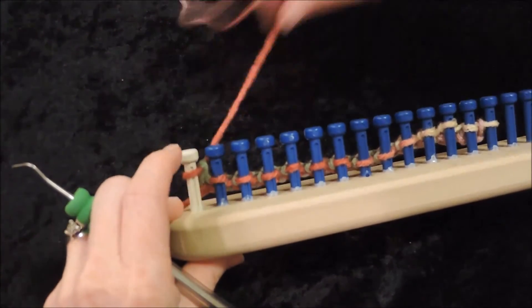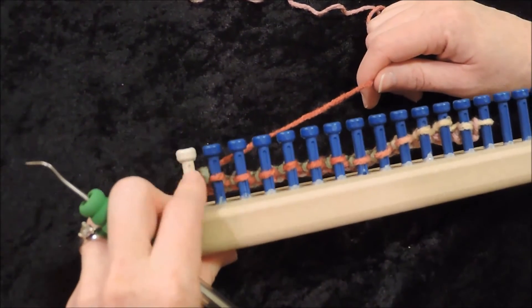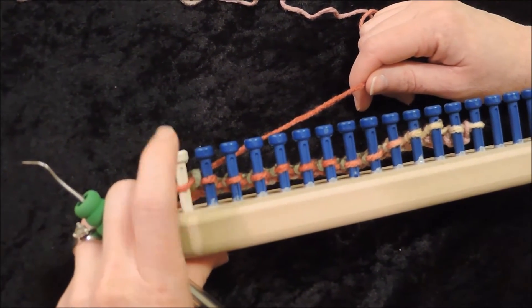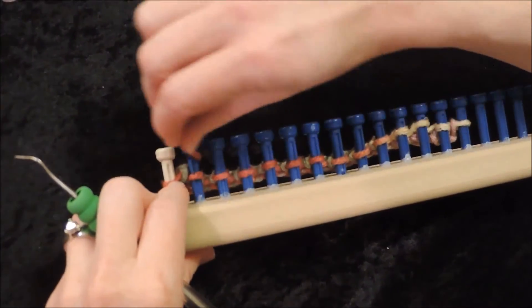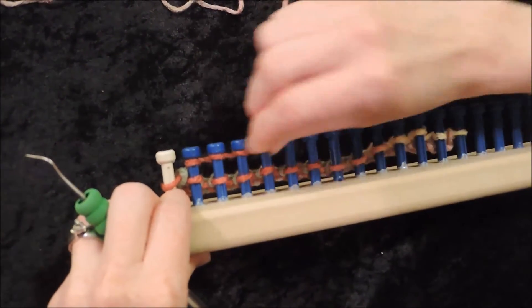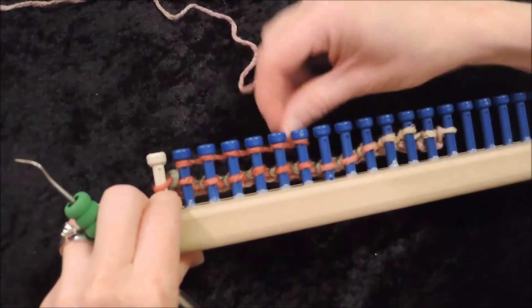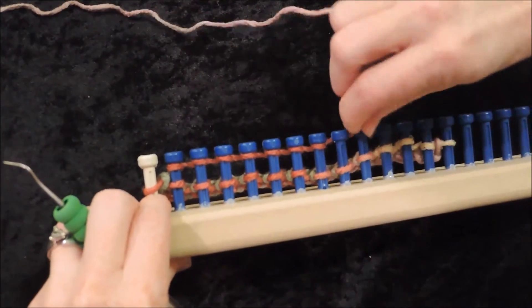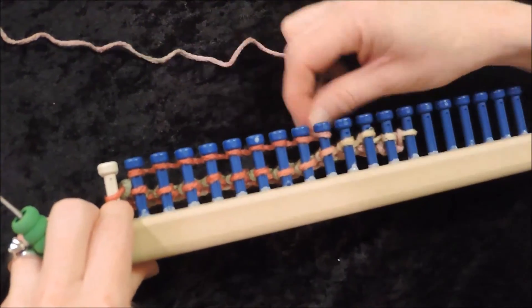And now I'm skipping my first peg. That's my slip stitch. I'm skipping it starting with the second peg on my e-wrap. I'm going to do that process again going all the way down. And of course the last peg will be e-wrapped as well.